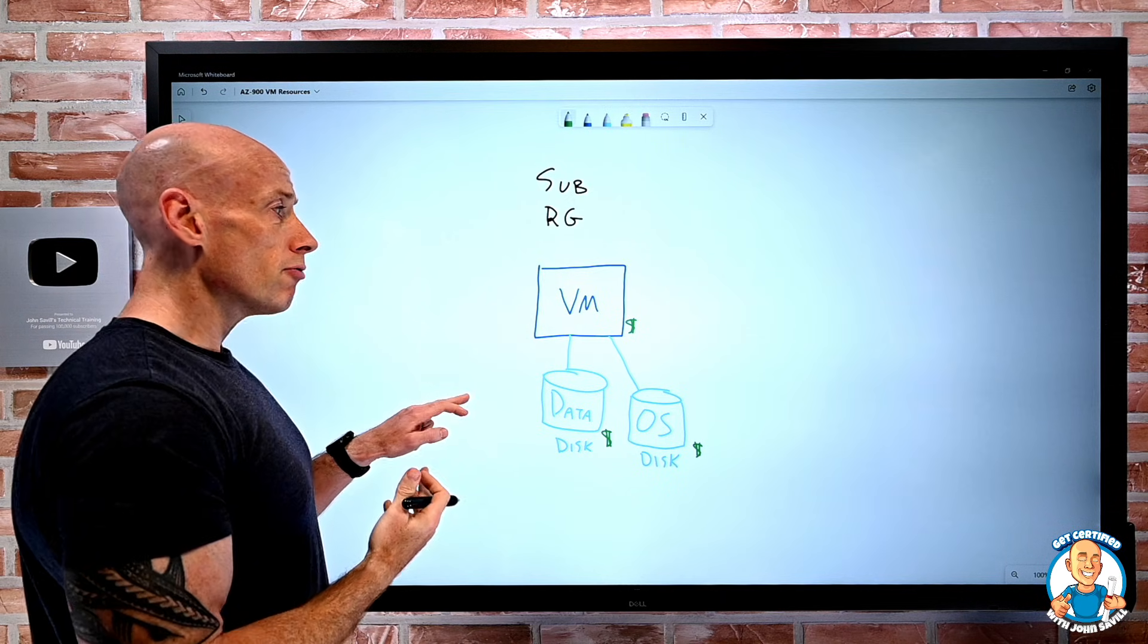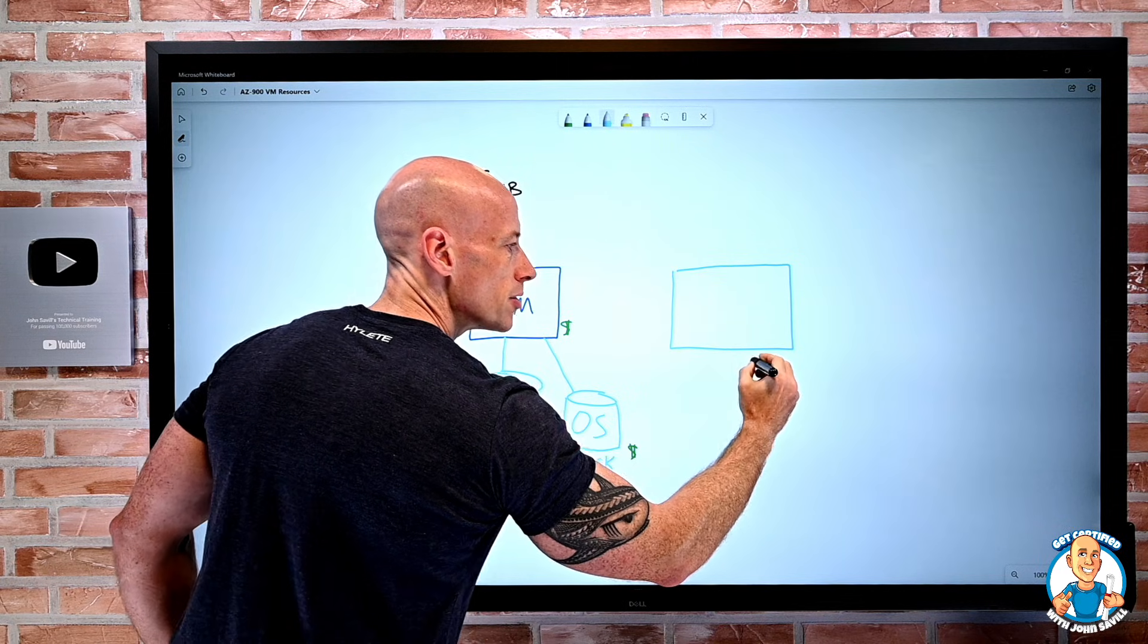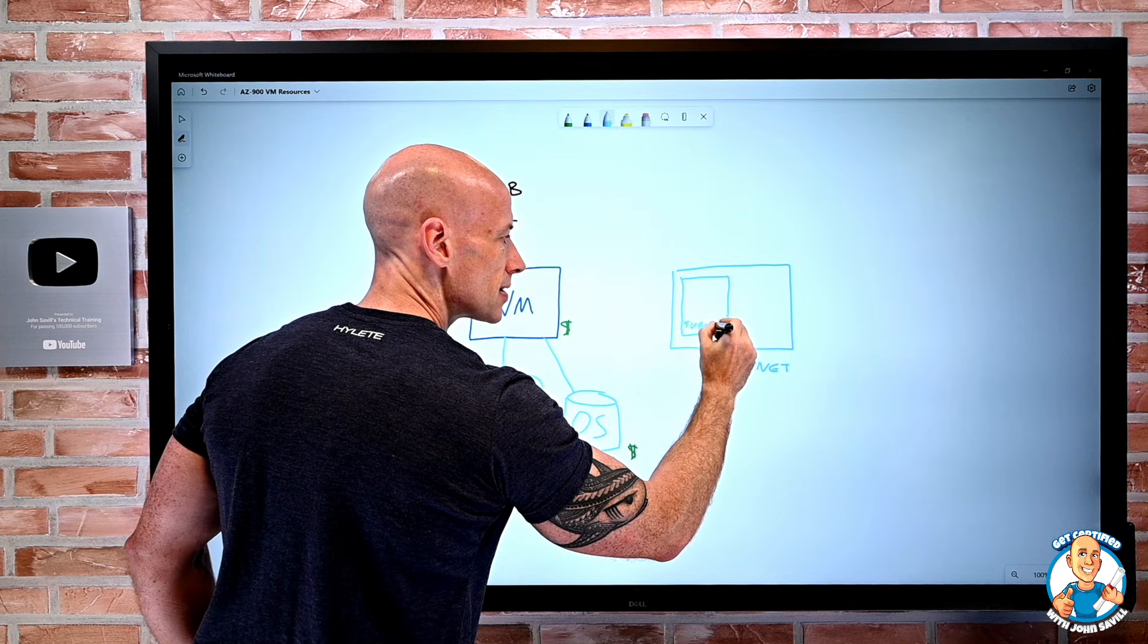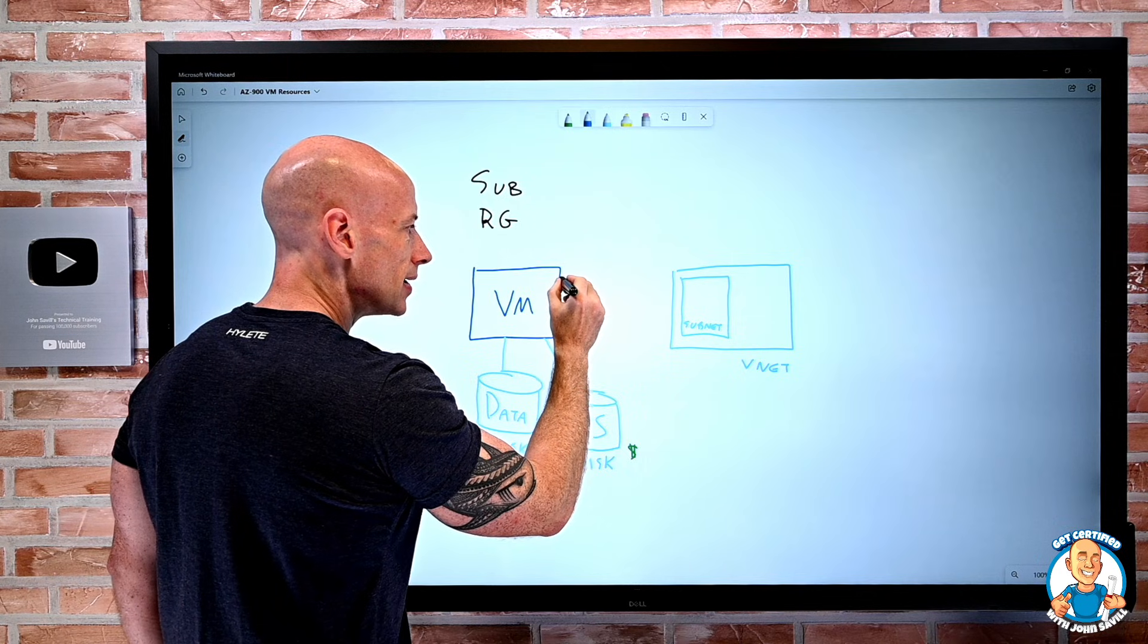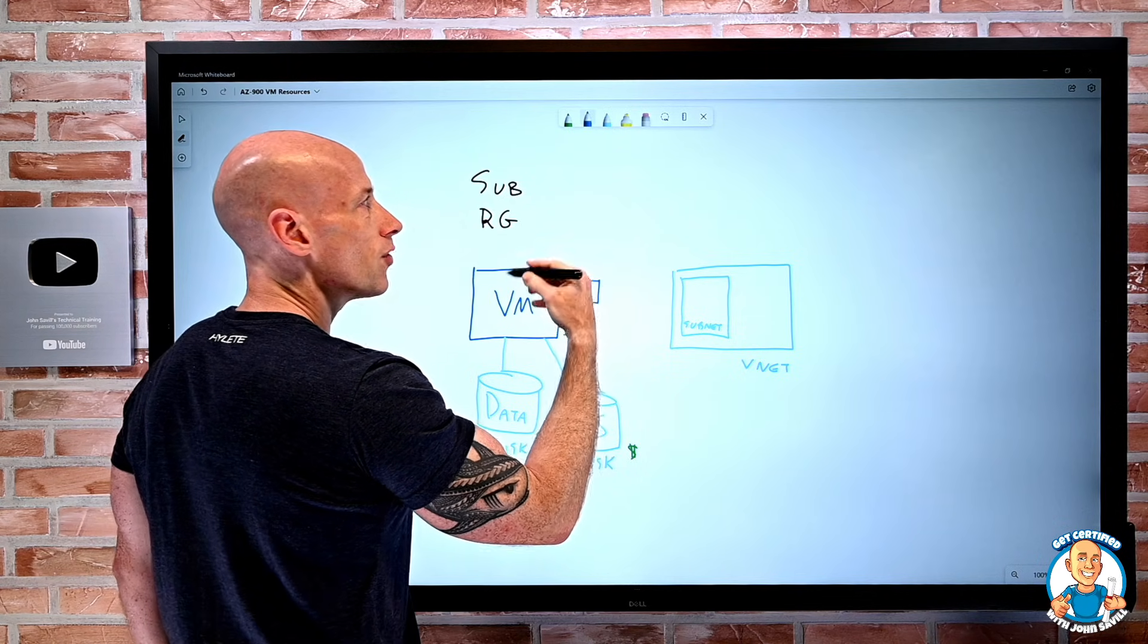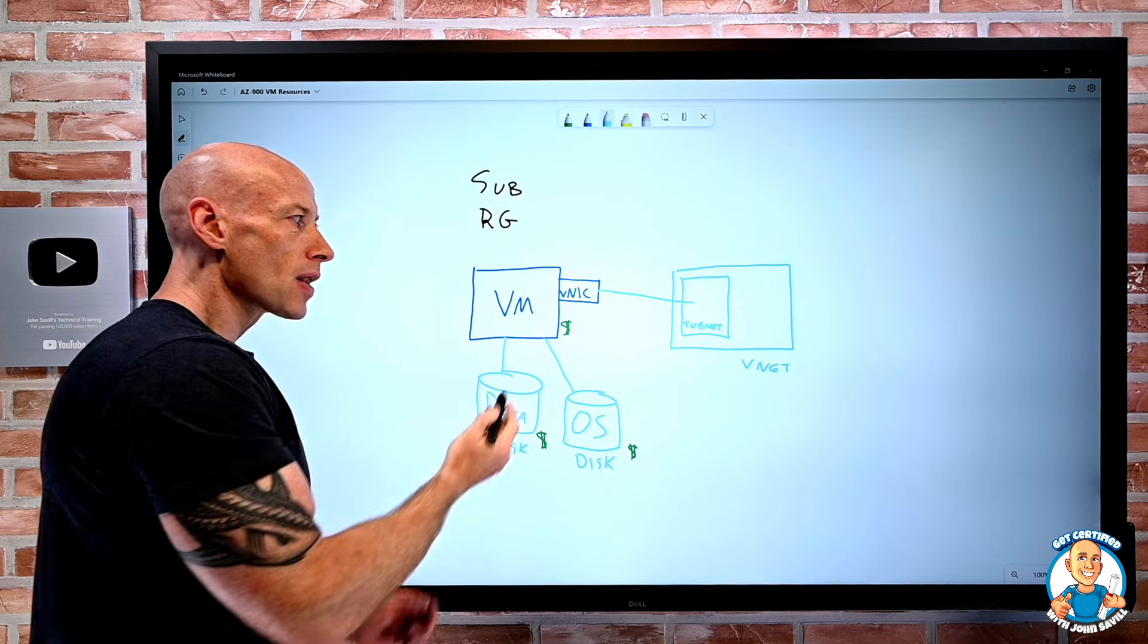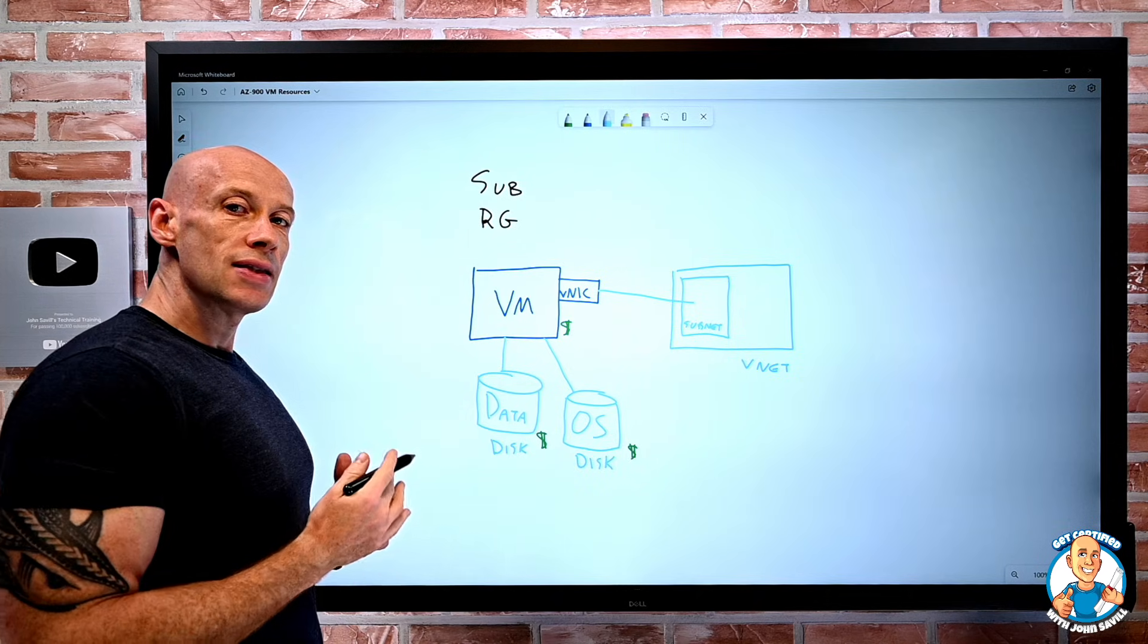That virtual machine requires connectivity. There's going to be a virtual network. In that virtual network, we define it up into subnets. And so on that virtual machine, we're going to attach to it a virtual NIC. That virtual NIC will connect to a particular subnet in a particular virtual network. So that NIC is its own resource. The virtual network is its own resource.